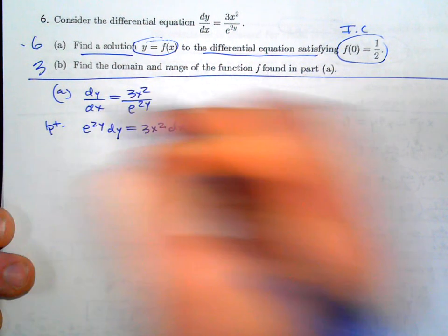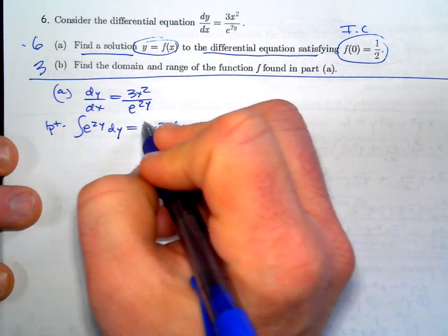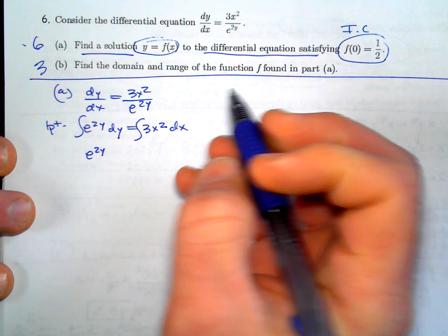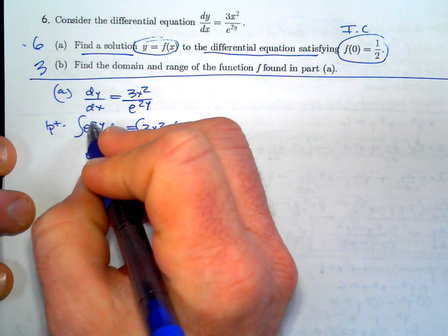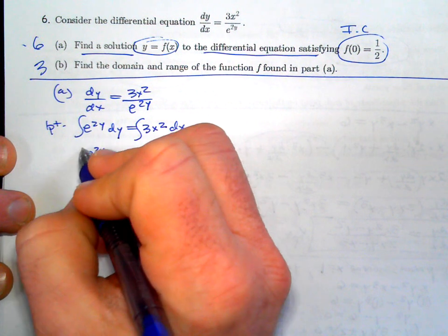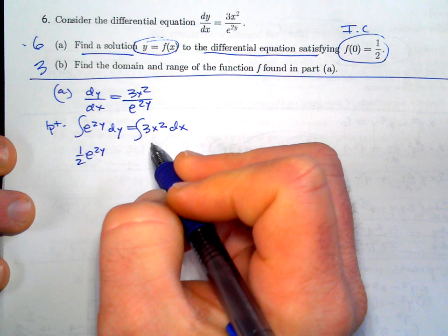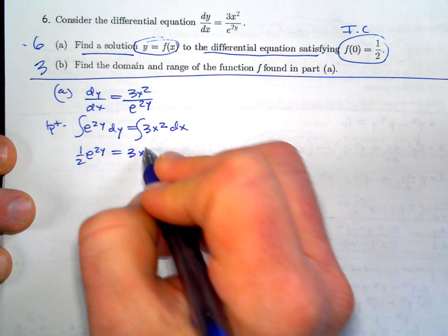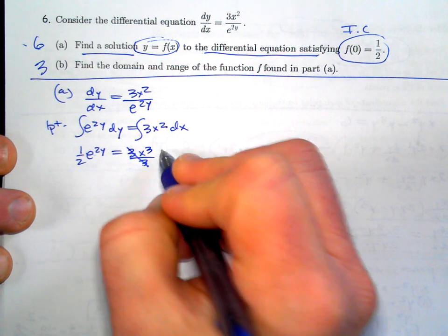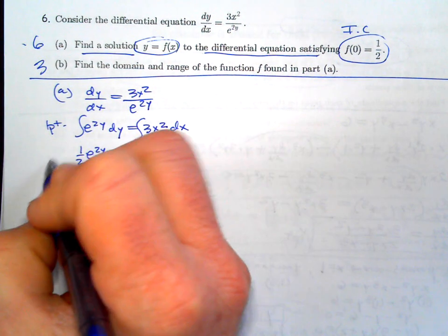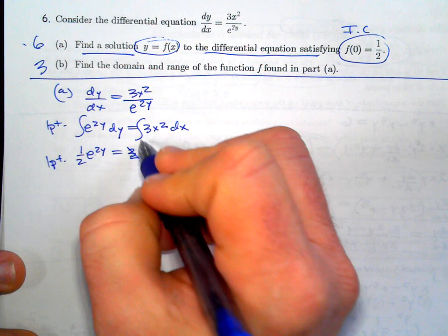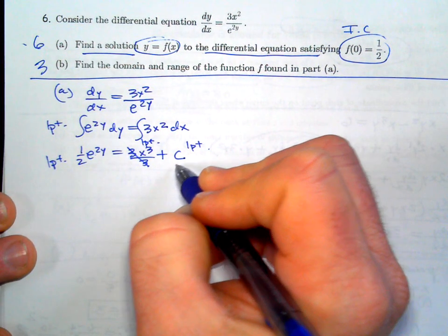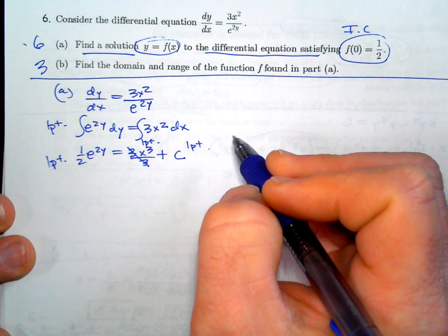First, separate the variables — if you don't, you get zero out of six points. Get the y's on the left with dy and the x's on the right with dx. That step is worth a point. Then integrate both sides: the integral of e^(2y) is (1/2)e^(2y) — you need the 1/2 because of chain rule. The right side gives 3x³/3 = x³. Don't forget to write +C or you lose the next three points.